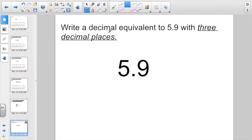Here it says, write a decimal equivalent to 5 and 9 tenths with three decimal places. Well, right now, I have one decimal place, right? And they want us to write it with three decimal places. Here I have a bunch of nothing. What type of digits can I put in there? That would be zeros because zero is the same as nothing. 5 and 900 thousandths is equivalent to 5 and 9 tenths.